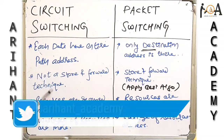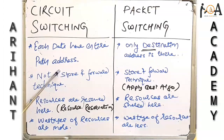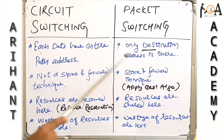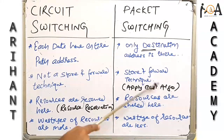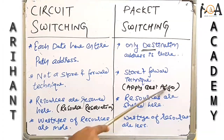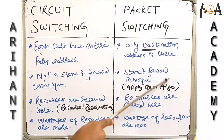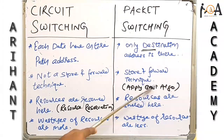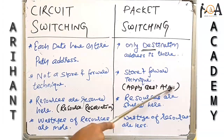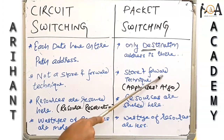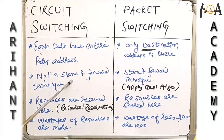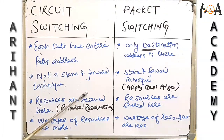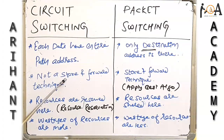Circuit switching is not a store-and-forward technique — once the path address is established, data is sent continuously throughout that path. Whereas in packet switching, the store-and-forward technique is applied: the data is stored, then the best path is found using an optimal algorithm, and then the data unit is sent. Even if there is a better path, in circuit switching you must send only through the established path.